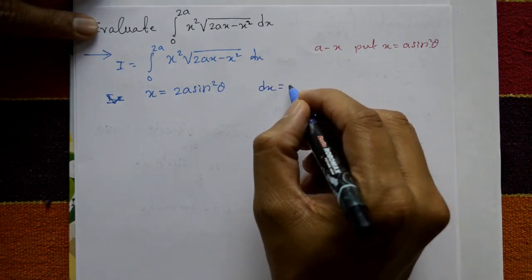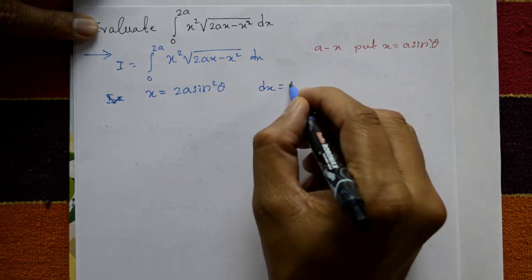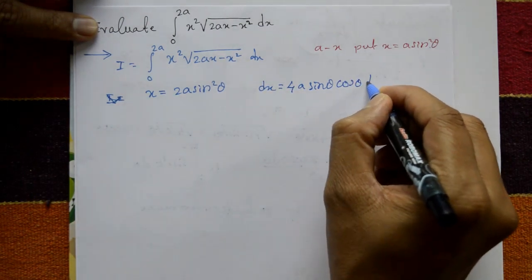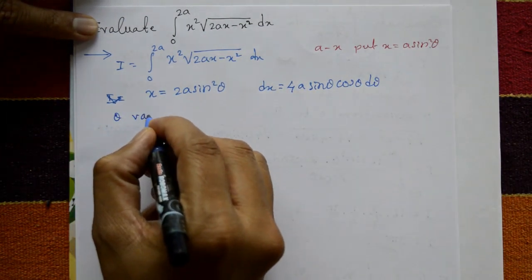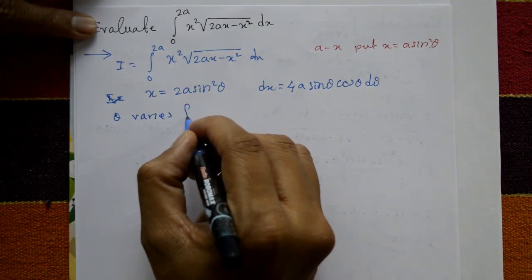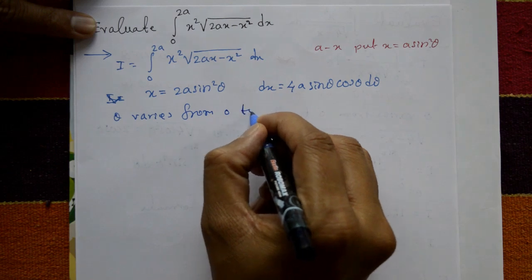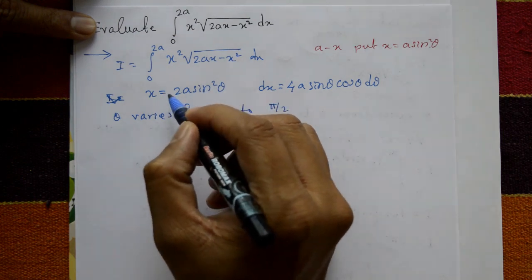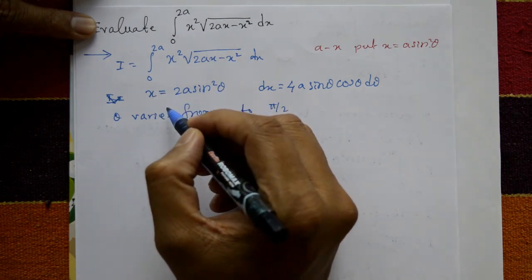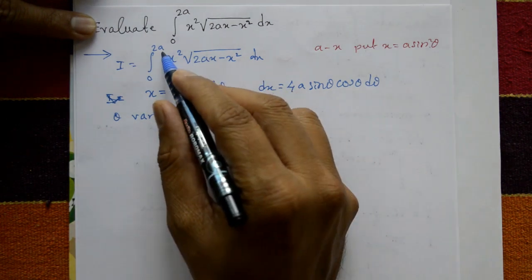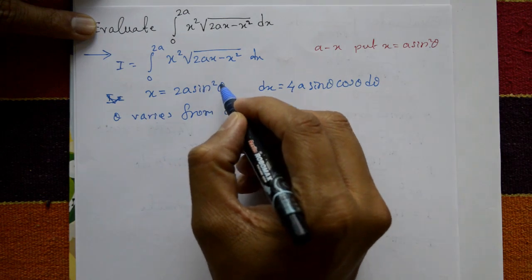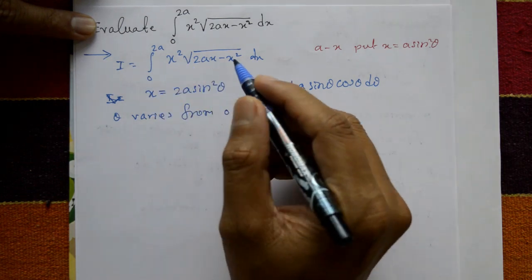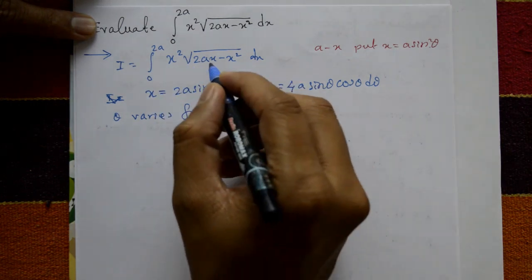And dx is equal to — differentiating this one — 4A sinθ cosθ dθ. Theta varies from 0 to 90 degrees, means 0 to π/2. Put x equal to 0: sin²θ = 0, so θ = 0. Put x equal to 2A: 2A cancels, sin²θ = 1, so θ = sin⁻¹(1) = 90 degrees, means 0 to π/2.